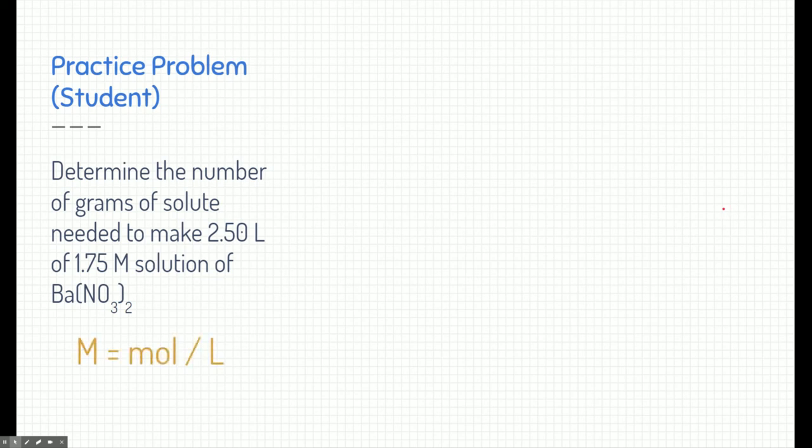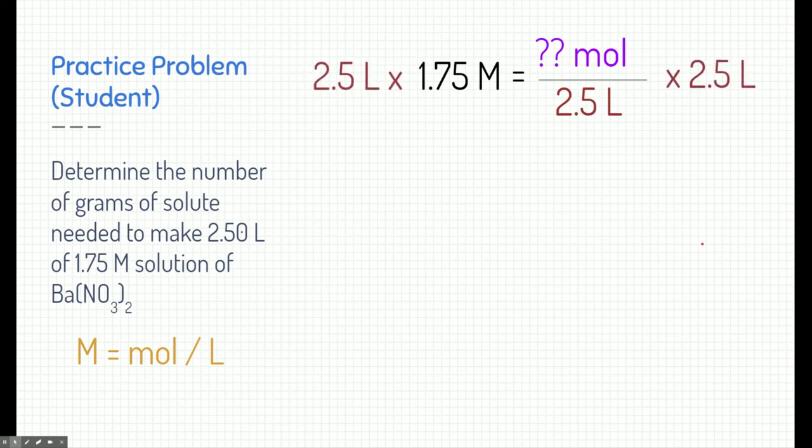All right. Let's get started. Let's start with our molarity problem. Molarity equals moles per liter. If we plug in what we have, we have 1.75 molarity, and we have 2.5 liters, but we're missing moles. So one thing we can do right now is we can solve for moles. Well, what do we do? Well, let's take the liters. Let's take 2.5 liters and multiply it on both sides. That means we can cancel out the 2.5 liters on the right side, and then the 2.5 liters on the left side can be multiplied by the molarity. This is going to help us solve for our moles.